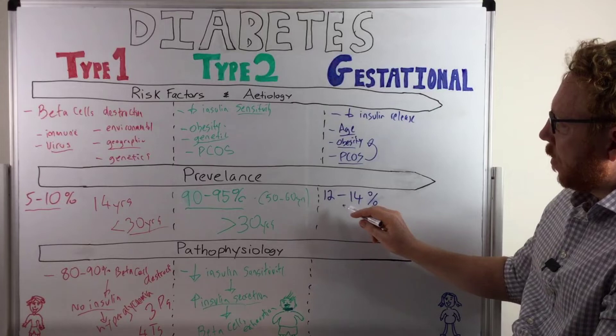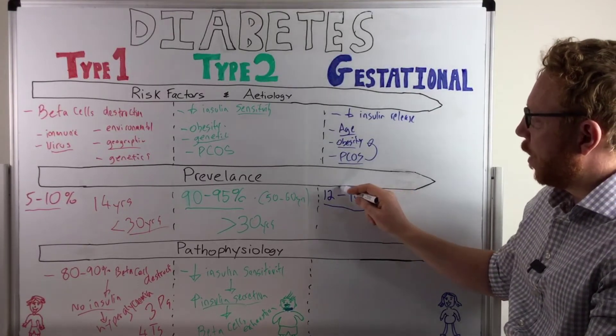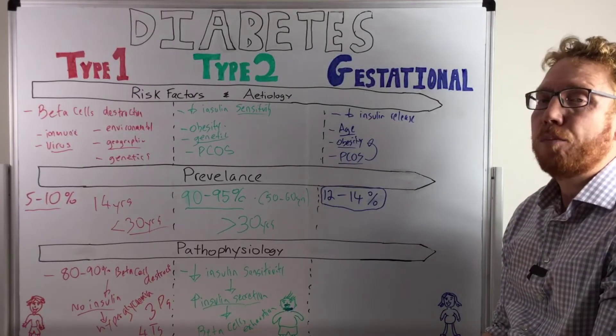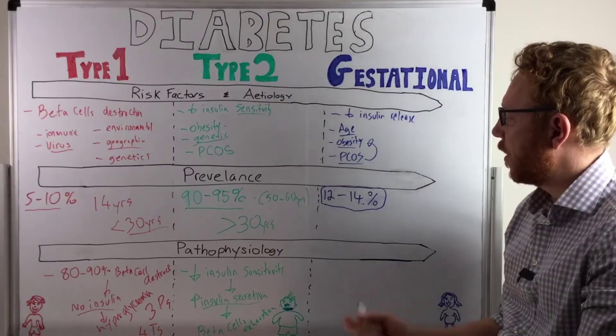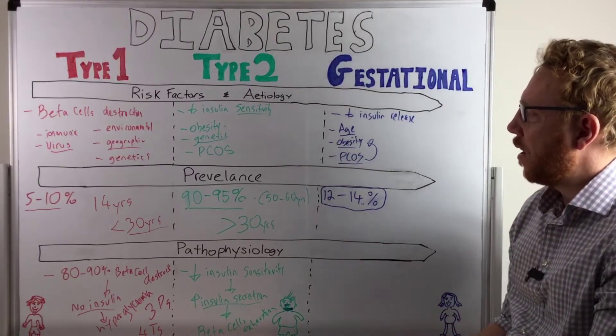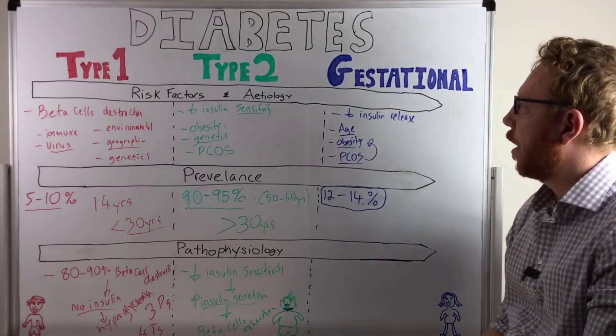In terms of the prevalence, approximately, at least in Australia, but I would say this would be similar to most Western countries, about 12 to 40% of all pregnancies will result in gestational diabetes. So that's also increasing. And in terms of age, it's a bit different because the important factor here is you have to be pregnant.